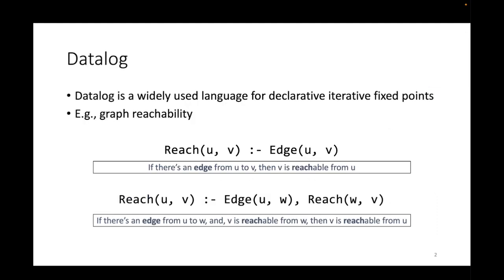So what is Datalog? Datalog is a widely used language for doing iterative fixed point computations in a declarative manner. For example, let's say we want to compute graph reachability and we have our graph represented as a relation called edge that contains a set of edges. Graph reachability can be expressed using these two Datalog rules. The first says that if there's an edge from u to v, we can say that v is reachable from u.